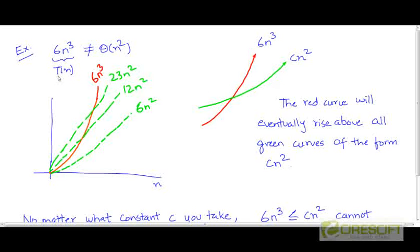Here is one more example. Suppose T is equal to the function 6n³. We claim that T is not theta of n².